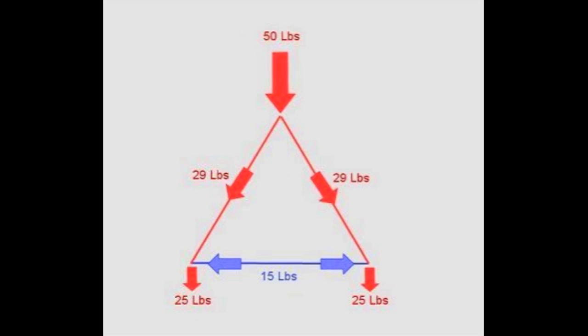Now you can see that at the ground level you've got 25 pounds on two feet, which makes perfect sense because you've got a 50 pound load shared with two feet. But what might not be obvious is that we've got 29 pounds of compression and 15 pounds of tension across the bottom of the triangle.